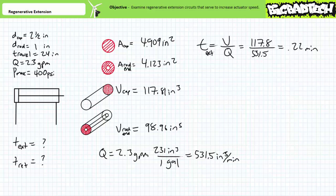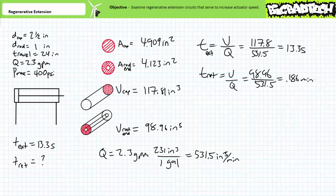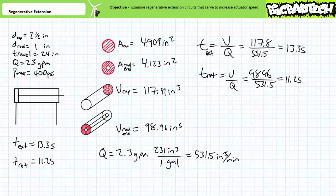Time equals volume over flow rate. To fully extend this cylinder given this flow rate it would necessitate approximately 0.22 minutes, or approximately 13.3 seconds. To fully retract this cylinder it would necessitate approximately 0.186 minutes, or approximately 11.2 seconds. Note how fully retracting the cylinder took less time than extending it because of the fundamental volume imbalance between the cap and rod end. This is always the case — if your calculations suggest otherwise, you are doing it wrong.